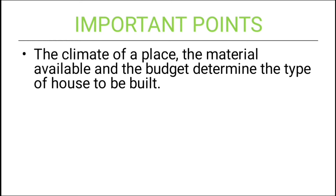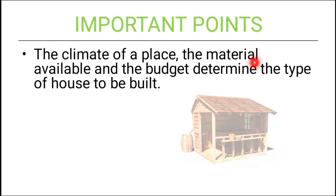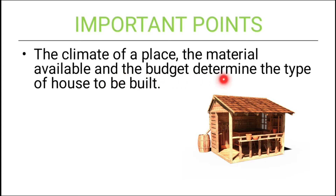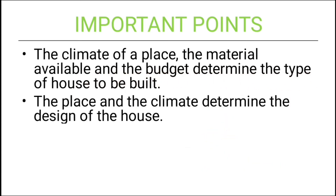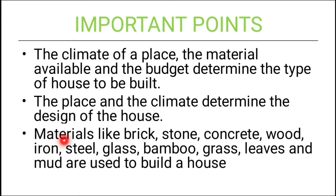The climate of a place, the material available, and the budget determines the type of house to be built. The place and the climate determine the design of the house. Materials like brick, stone, concrete, wood, iron, steel, glass, bamboo, grass, leaves, and mud are used to build a house.